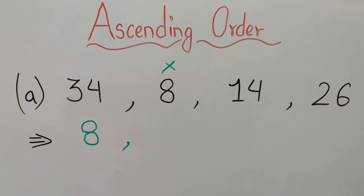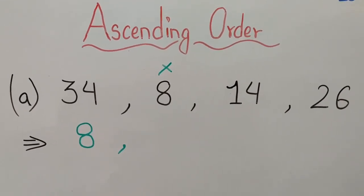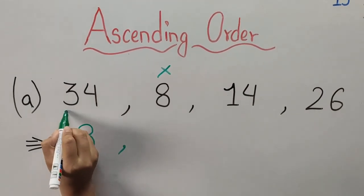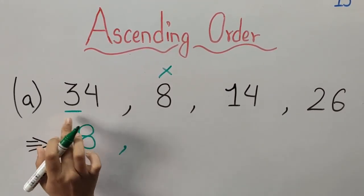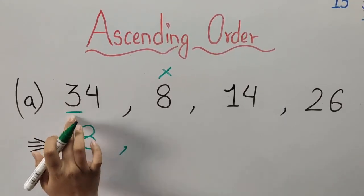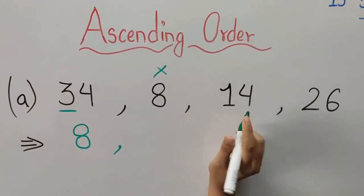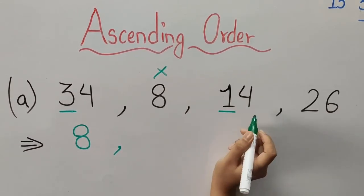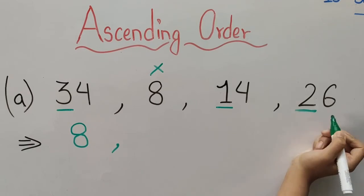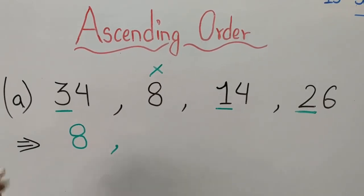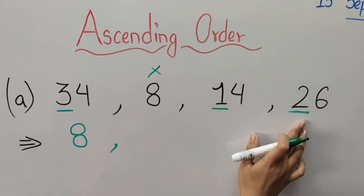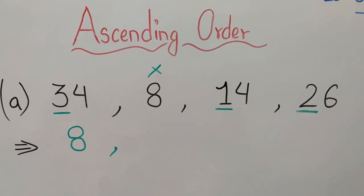Which one is the biggest number over here? We have to focus on the first number of the two digit number. In 34, three is the first number; in 14, one is the first number; and in 26, two is the first number. Among these three — three, one, and two — which one is the smallest number?